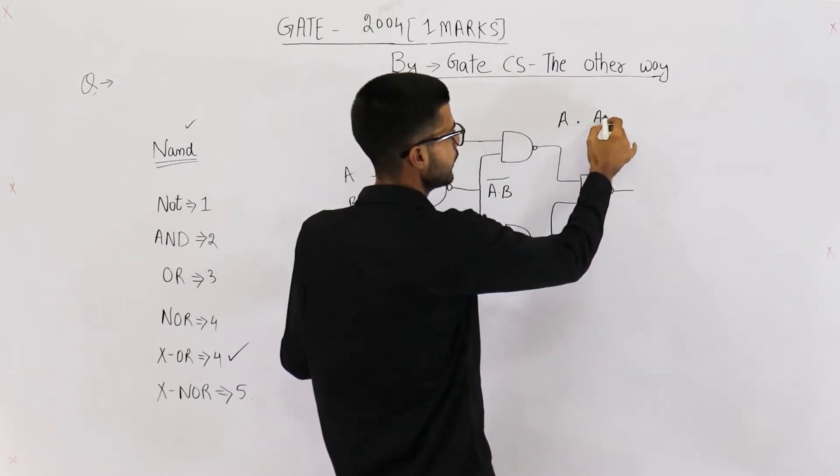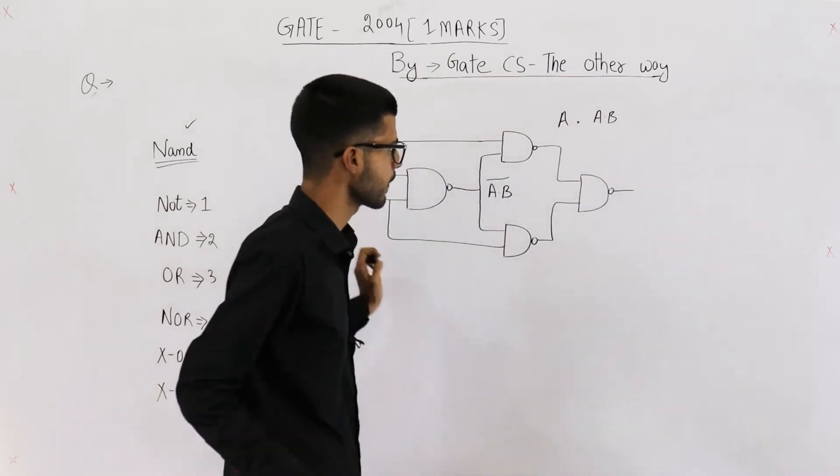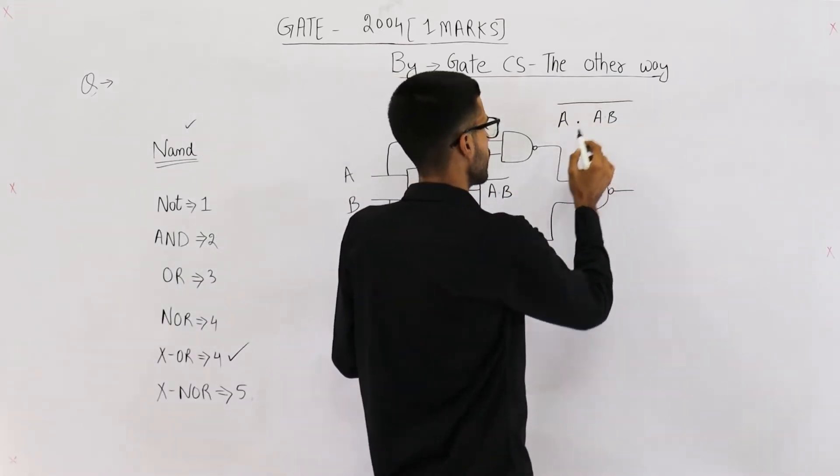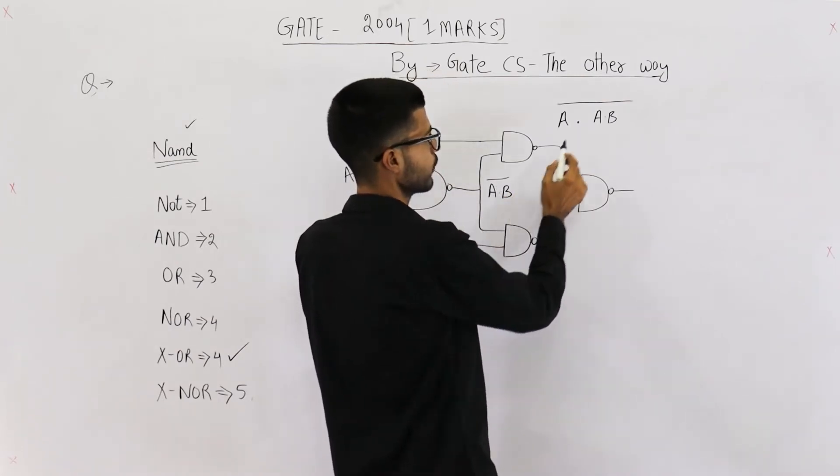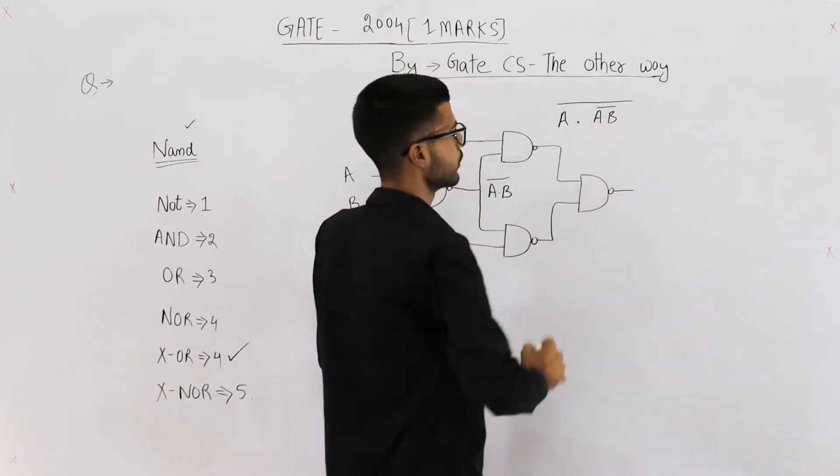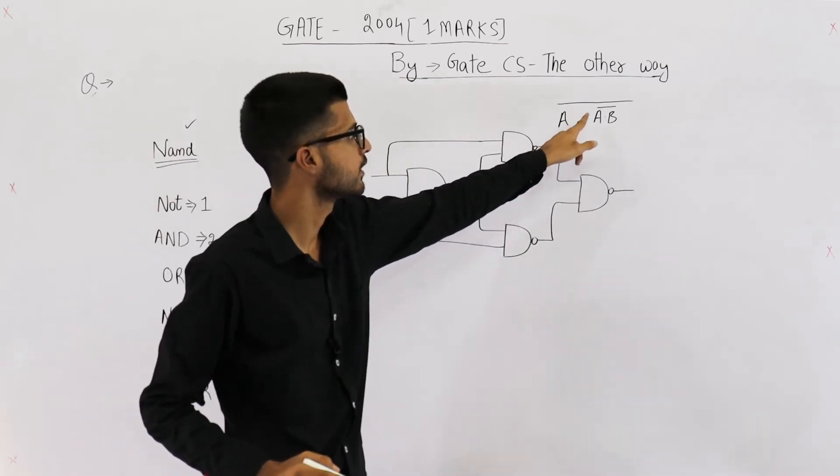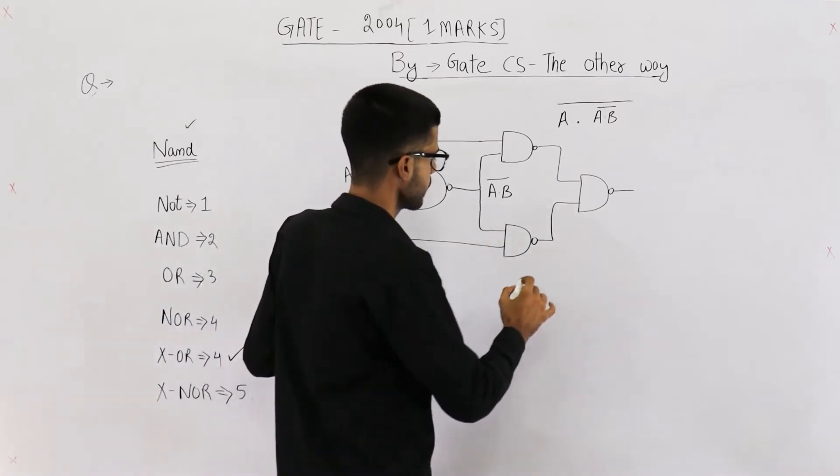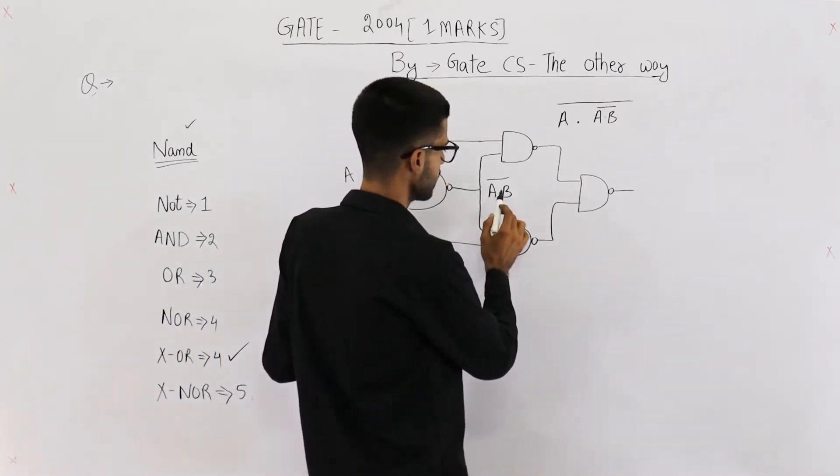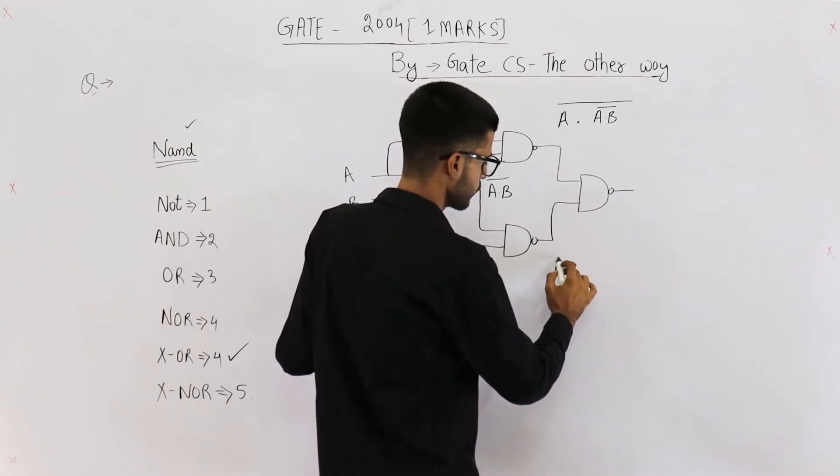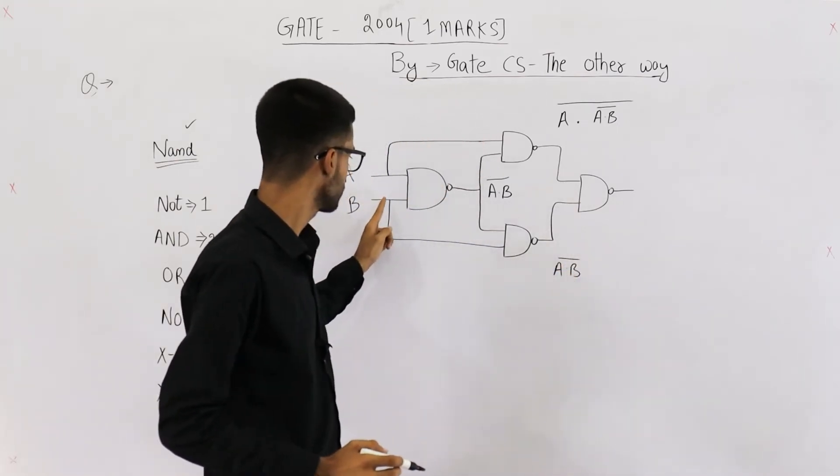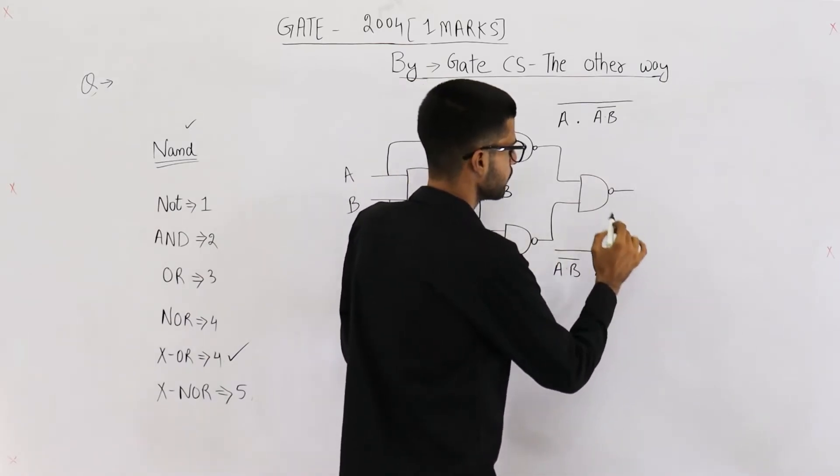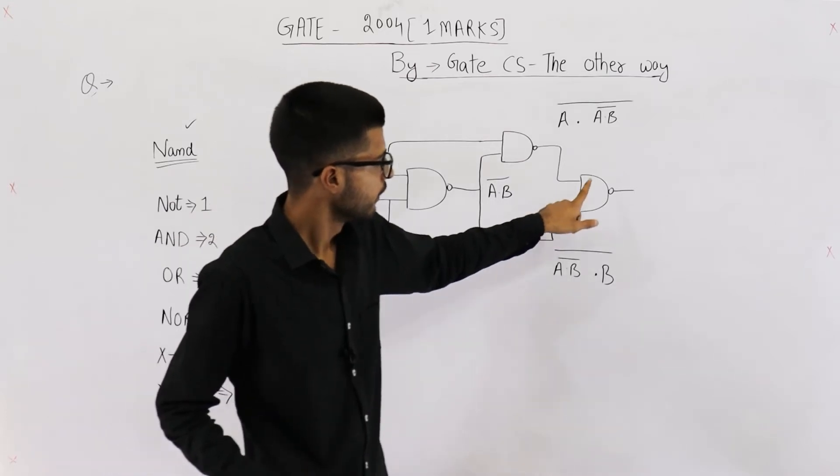And this one is a NAND gate, so we are taking NAND of this whole thing. The second input was A NAND B, so output of this NAND gate is written here. Similarly, let's write the output of this NAND gate also. So first input is A dot B whole complement, and second input is B.